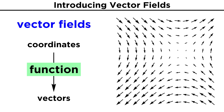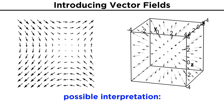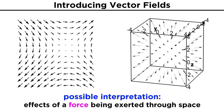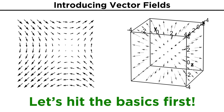Of course, we are not limited to just two dimensions. Vector fields can exist in any number of dimensions, and an example of a three-dimensional field is shown here. These vector fields can have a variety of practical interpretations, such as a force being exerted through space, or as the representation of motion. But for now, we will just focus on the general concept of a vector field and cover some basics.